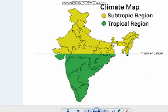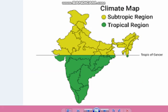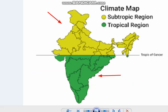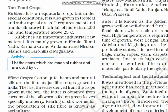India lies in tropical and subtropical regions because it is near the equator and the Tropic of Cancer passes through it. The southern part of India lies in tropical and the northern part in subtropical regions. Rubber requires a moist and humid climate with rainfall of more than 200 centimetres and temperature above 25 degrees Celsius. It is an important industrial raw material, grown in Kerala, Tamil Nadu, Karnataka and Andaman & Nicobar.